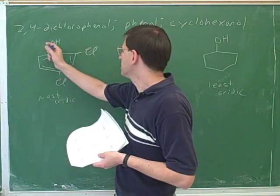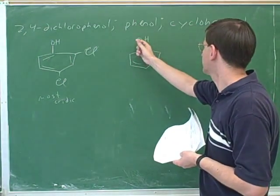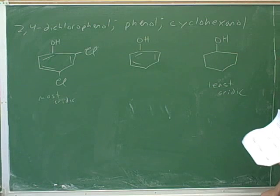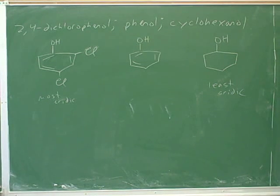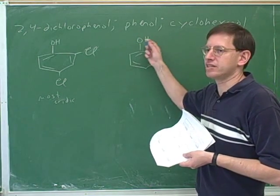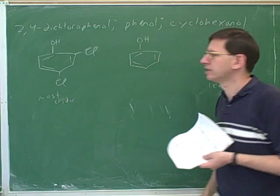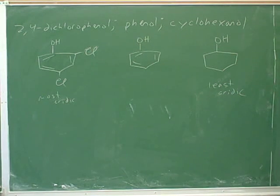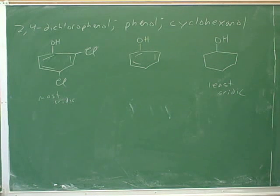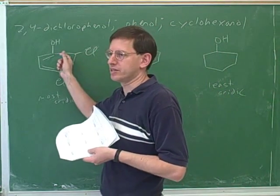Why is this compound more acidic than this one? Because it has the ability to spread through resonance — it can spread that negative charge throughout the ring. That's right. If it lost the proton, it could stabilize its negative charge by resonance. And why is this one more acidic than the other? Because of the electron-withdrawing chlorides at the ortho and para positions. If deprotonated, the negative charge is better stabilized throughout the ring because of the electron-withdrawing effect of the chlorines. These are electron withdrawers, so they help stabilize the charge.